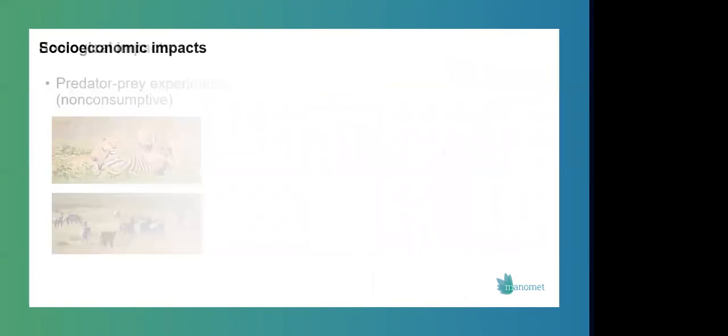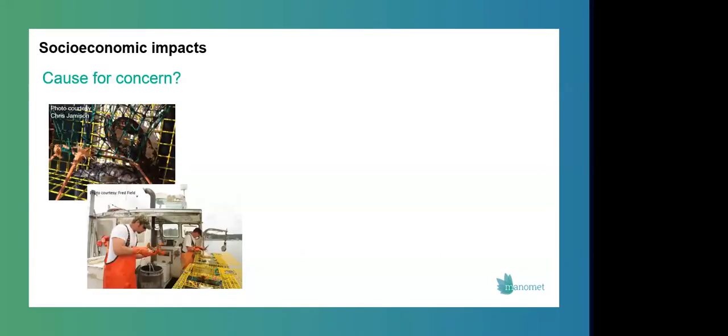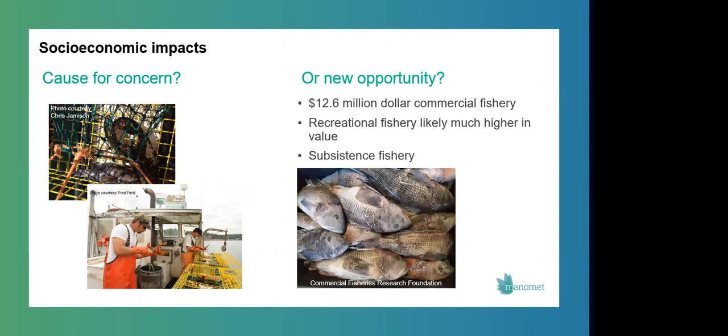So circling back to these ecological impacts leading to socioeconomic impacts, we know that sea bass are both consuming lobsters in the Gulf of Maine and influencing the population indirectly through these non-consumptive predation effects, which could have far reaching economic and social impacts in this industry. But at the same time, black sea bass support lucrative commercial and recreational fisheries in their native range and also contribute to subsistence fisheries. So is this actually an opportunity for the Gulf of Maine?